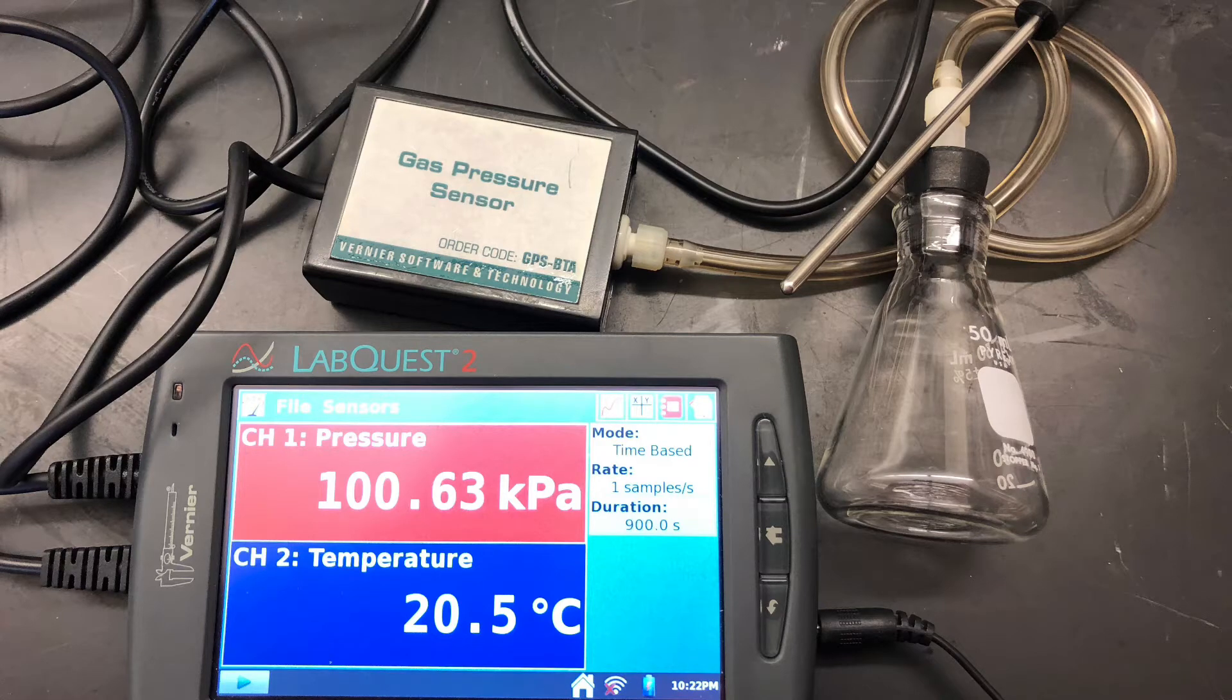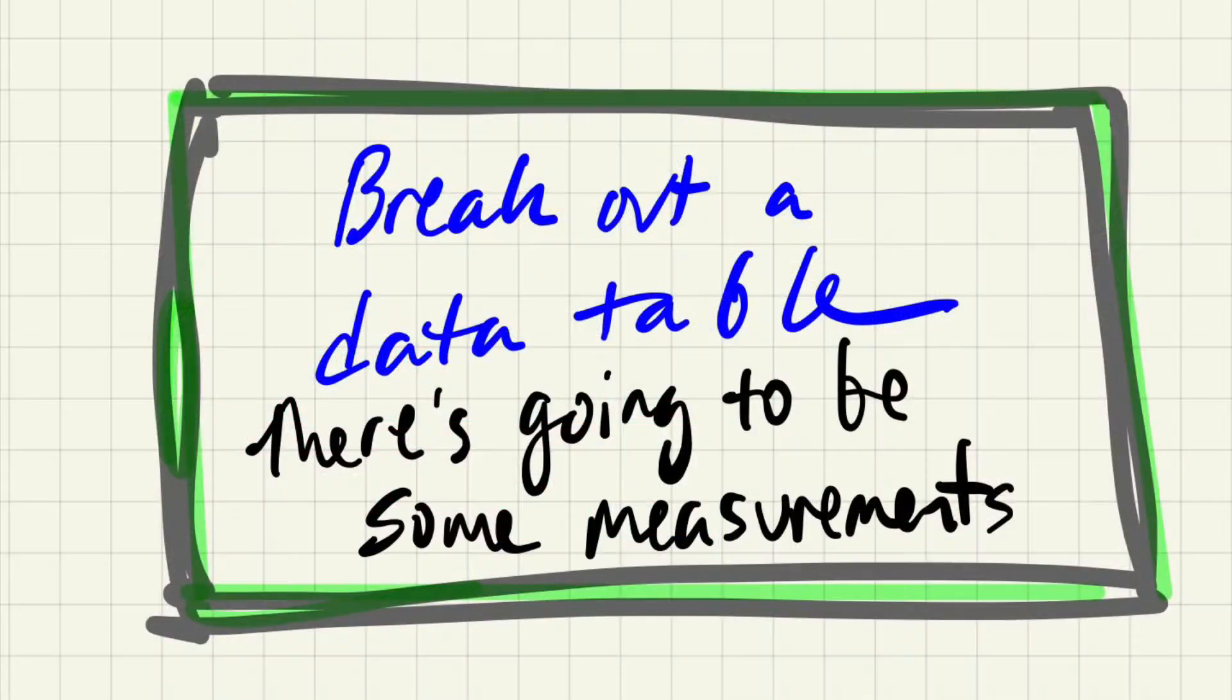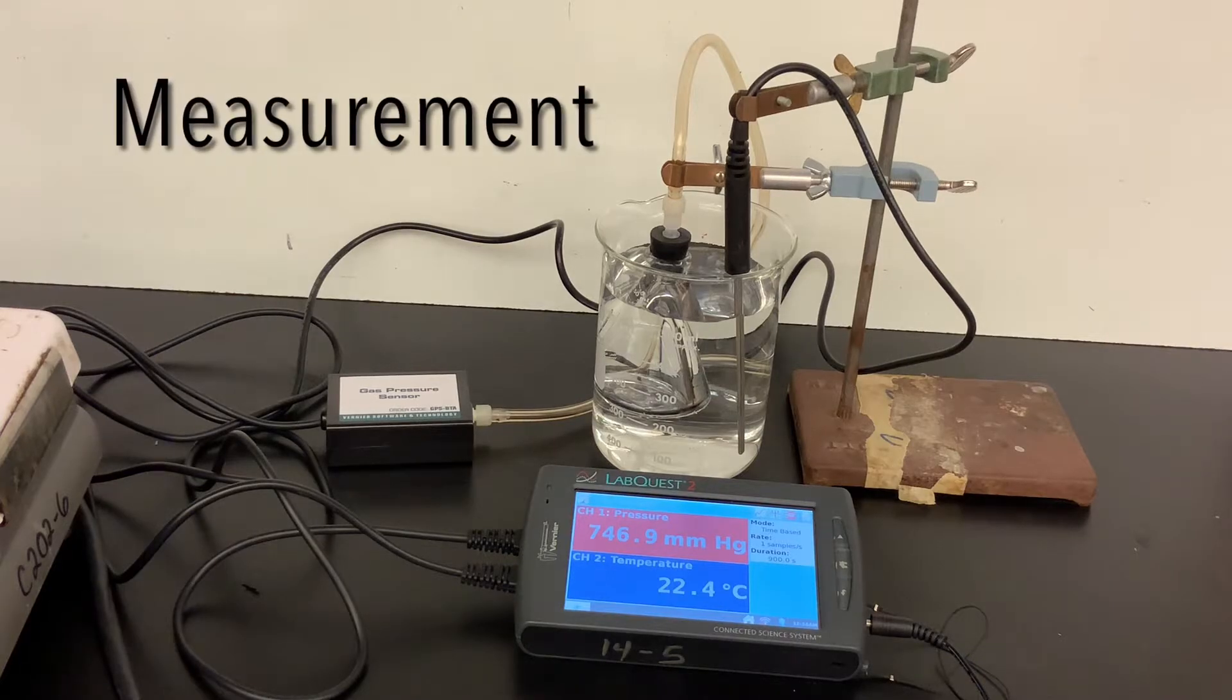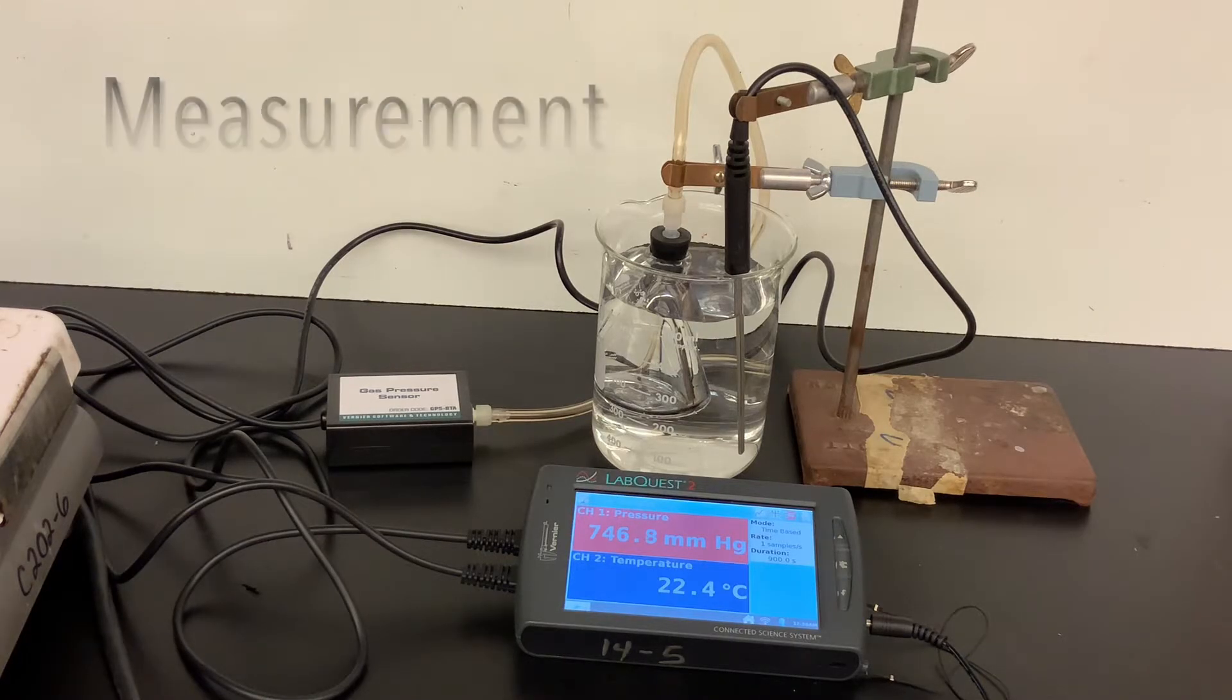Okay, if you haven't read your lab sheet, lab B4, pause the video and do that. Go make your data table because there are going to be some measurements. Okay, this is your first one. Room temperature, record the temp and record the pressure.